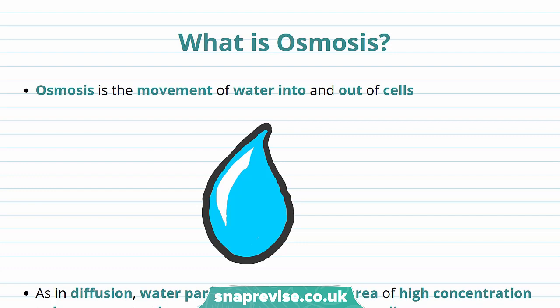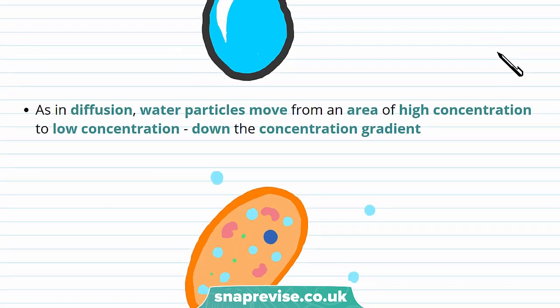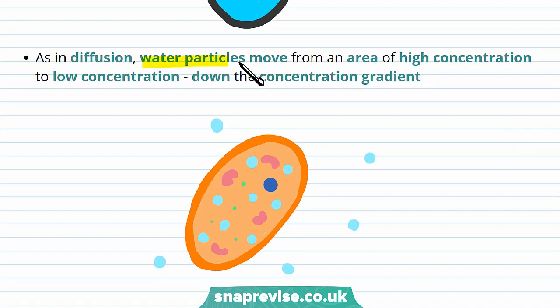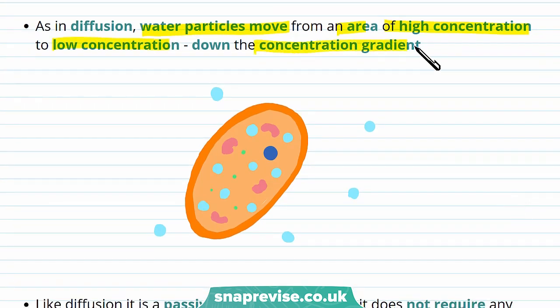Osmosis is another process where substances move into and out of cells. However, osmosis is specifically the movement of water into and out of cells. Osmosis is actually a really vital process because a lot of cells use water in chemical reactions needed for you to survive. Osmosis is similar to diffusion in that water particles move from an area of high concentration to an area of low concentration, and this is down the concentration gradient.